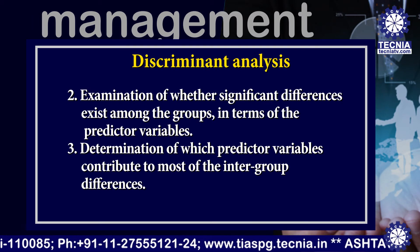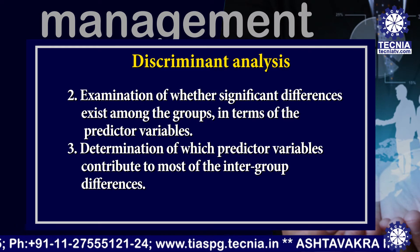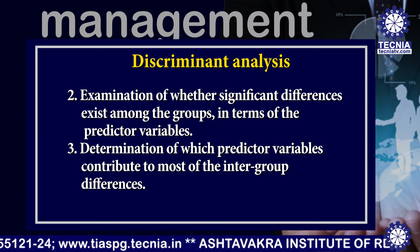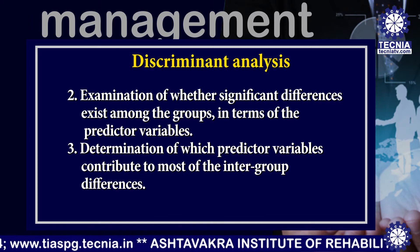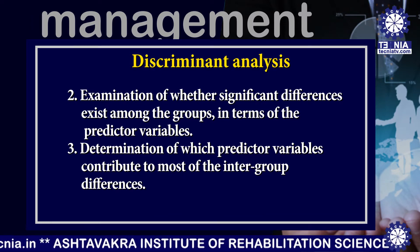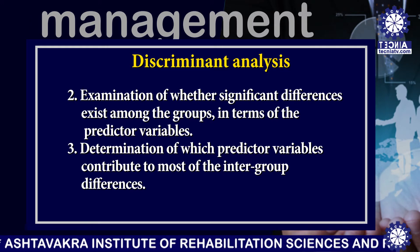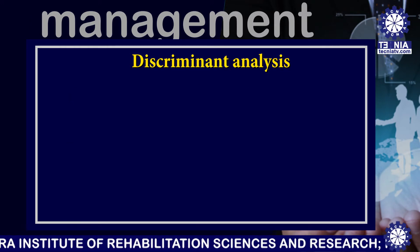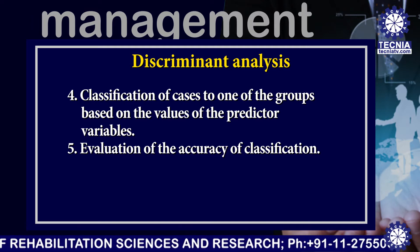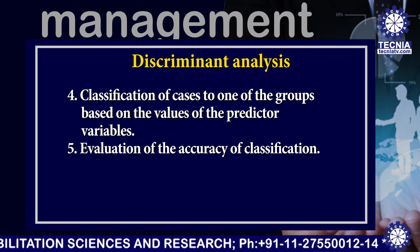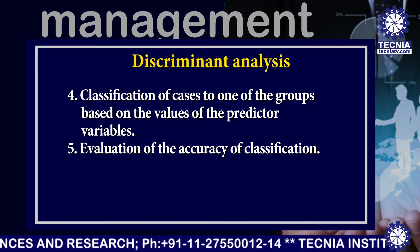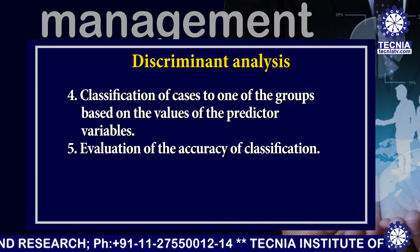Second, examination of whether significant differences exist among the groups in terms of the predictor variables. Third, determination of which predictor variables contribute most to the intergroup differences. Fourth, classification of cases to one of the groups based on the value of the predictor variables. Fifth, evaluation of the accuracy of classification.